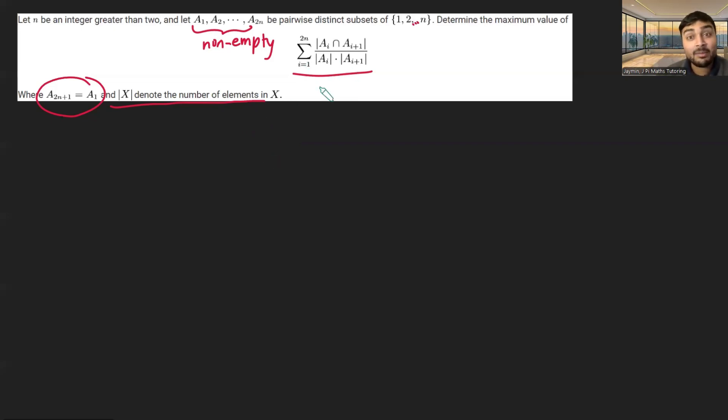What we're going to do is find an upper bound to this, and then show that that upper bound is indeed attainable. So we're going to first analyze the thing that we're adding up, the summand. It's the intersection between ai and ai plus 1 in cardinality over the cardinality of ai times the cardinality of ai plus 1.